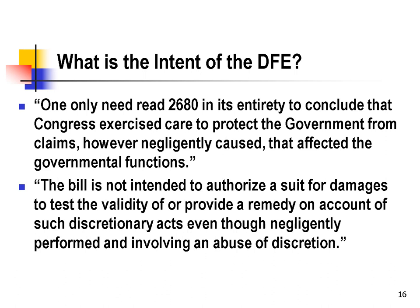The Court found that the Tort Claims Act and the discretionary function immunity under Section 2680, read in their entirety, make clear that Congress wanted to give the government maximum protection for its discretionary decision making. As the Court said, the bill is not intended to authorize a suit for damages to test the validity or provide a remedy on account of such discretionary acts, even though negligently performed and involving an abuse of discretion. Rather than giving claimants a chance to test agency policy in court, those lawsuits are cut off by the discretionary function exception. This is intended to allow government decision makers to make their decisions without having to worry about being second-guessed in later litigation.